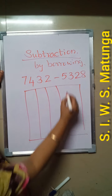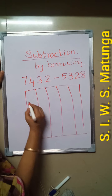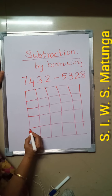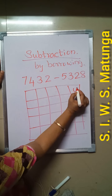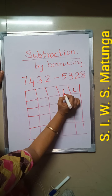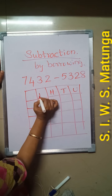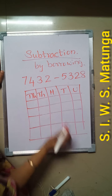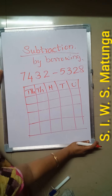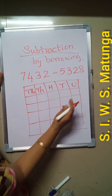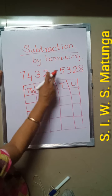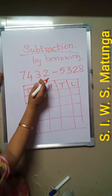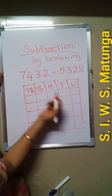Draw 5 columns for the place value table. Write the place names: units, tens, hundreds, thousands, and ten-thousands. When doing borrowing subtraction, always leave one box for borrowing and write the numbers in the second box.